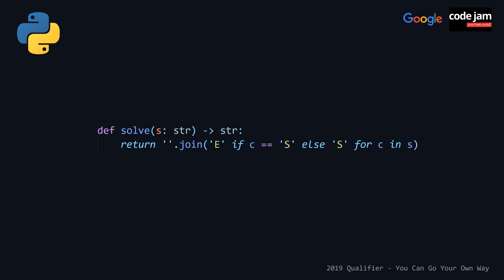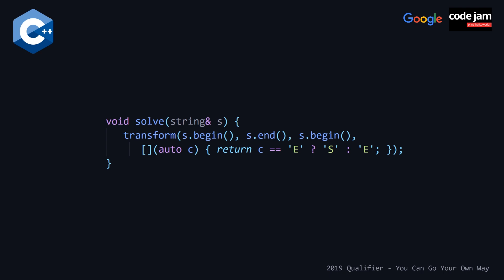Moving on to our C++ solution, here we are using a string. We don't need to worry about using a parallel data structure like in Java because strings in C++ are mutable. So we can pass the string in by reference and make one call to the transform algorithm, passing it the iterators to the begin and one-past-the-last element, mutating the string itself by passing the begin iterator again. The lambda does the same thing as the ternary operator in Java — for each character, return 'S' if it equals 'E', otherwise return 'E'.